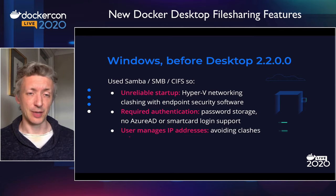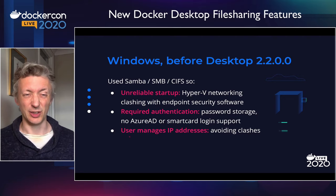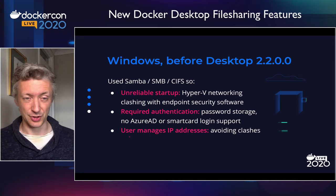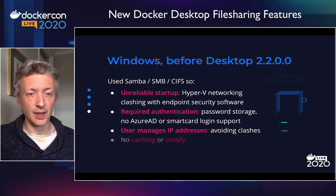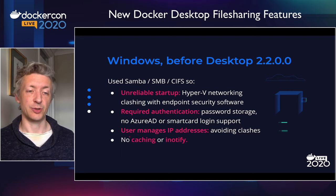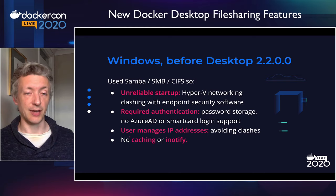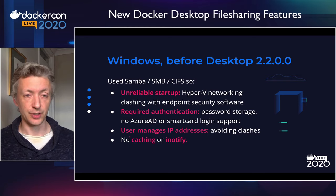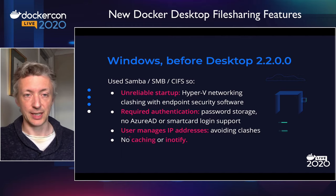And then I mentioned the network adapter. A consequence of using the network like that is you've got to have IP addresses on both ends, and these can clash with other things. Ultimately the user had to manage the clashes, so there was a user interface thing to let them change the subnet mask — it was a bit clunky and a poor user experience. And then finally, there was no actual caching really, and certainly no iNotify. So if you saved files on the host, the Linux VM wouldn't notice, and you had to use polling or something else.